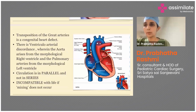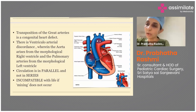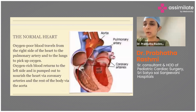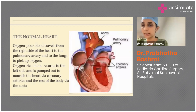In transposition, you need to understand a few terminologies. The right atrium connected to the right ventricle is called atrioventricular concordance. When the right ventricle is connected to the pulmonary artery, it's called ventriculo-arterial concordance. So RA connected to RV means atrioventricular concordance, and ventricle connected to PA means ventriculo-arterial concordance.